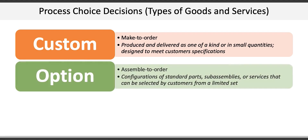The next is option or assemble-to-order goods and services. Here, products or services can be configured from a limited set of standard parts, sub-assemblies or services that can be selected by the customer. A made-to-order sofa might be an example where the customer picks a standard design frame and then selects from a wide range of fabrics and colours. Or there's McDonald's made-for-use system which assembles finished burgers to meet customer orders from standard and pre-prepared ingredients.